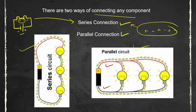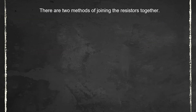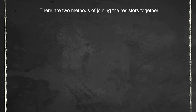In a parallel connection, the positive terminal of the battery is connected to the positive ends of all components, and the negative terminal is connected to all negative ends. So the arrangement looks like: positive, positive, positive on one side and negative, negative, negative on the other side. Such a connection arrangement is known as parallel connection — something you have studied in your previous classes.